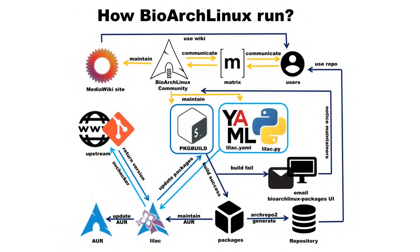In the final section, I will talk about how BioArchLinux runs. The community maintains packages via build files. We also maintain a wiki, and you can chat with us on the Matrix channel. The maintainer bot sends a signal to the version checker to get the package version from the upstream website. It then returns the package version, and the maintainer bot compares it with the old version and decides if the package needs to be updated.